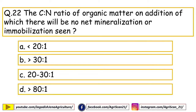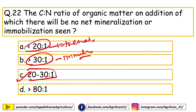Next question: the C:N ratio of organic matter at which there will be no net mineralization or immobilization is — options are less than 20:1, more than 30:1, 20–30:1, more than 80:1. The right answer is 20–30:1. If C:N ratio is less than 20:1, mineralization occurs. If greater than 30:1, immobilization occurs. Between 20:1 and 30:1, there is no net mineralization or immobilization. A detailed video on C:N ratio is already available on the YouTube channel.